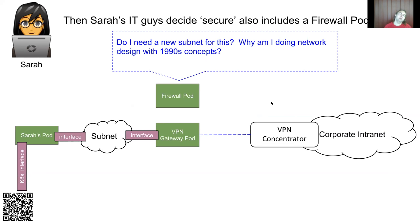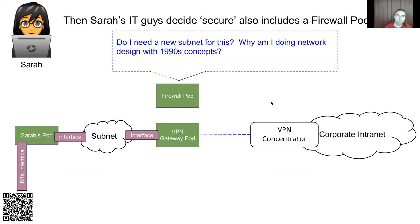It gets worse because corporate internets are not static. The prefixes in those corporate networks change, and that means the routes in Sarah's pods will have to change. And then somebody decides they want a first-pass firewall in the cloud, so now it becomes Sarah's problem to wire all of that in as well.